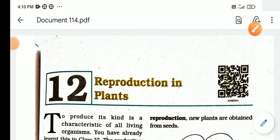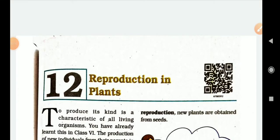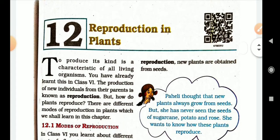Konrad, dearest student, today we are going to learn the 12th chapter in science. Title: Reproduction in Plants. Chhodma punarahutpadan. Plants means chhod. Here we are going to start unit number 12, Reproduction in Plants.